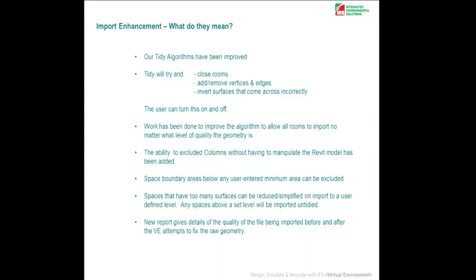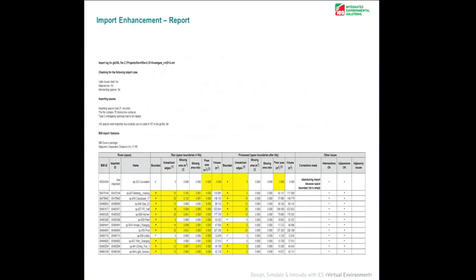There's also a new report — it's a lot more detailed. It gives you a summary of all the raw space boundaries and the processed space boundaries in the file, so that's the success rate of the rooms coming across. We're getting about 94 to 97% success rate out of over 1,000 models that we've tested.